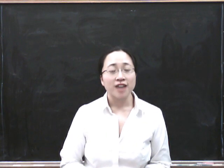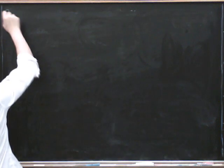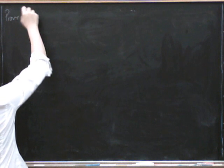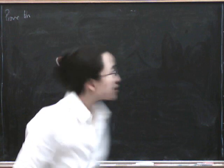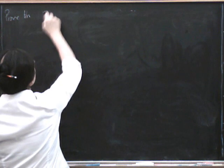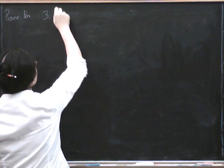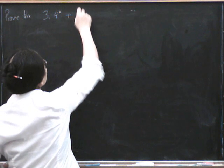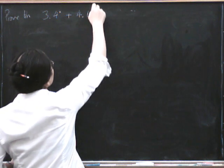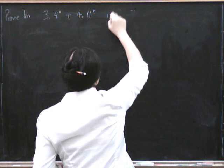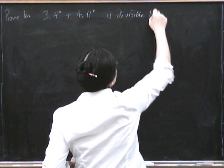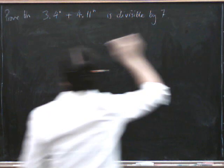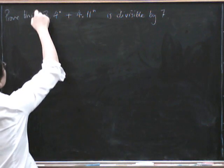Right, let's do another proof by induction, this time something a little bit different. Let's prove that for all n, we're going to prove that a certain number is divisible by 7. We're going to do 3 times 4 to the power of n, plus 4 times 11 to the power of n. And we're going to show that that is divisible by 7, for all n in the natural numbers.